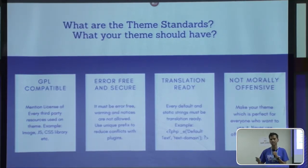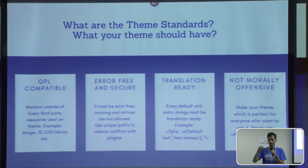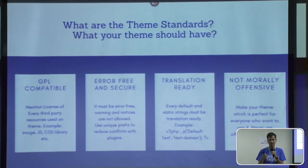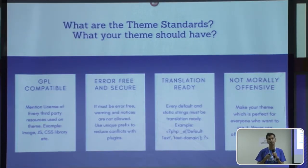Even plugins, even themes — everything in WordPress is GPL and themes must also be GPL. All images, all libraries — for example, JS, CSS — whatever you use in a theme must be GPL. If you are using images in your theme, those must be GPL compatible. CC0 license and MIT license are GPL-compatible licenses. If you randomly Google an image and put it in your theme, that is not allowed.